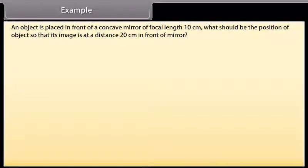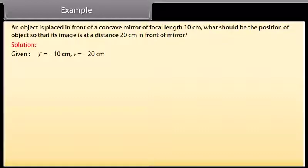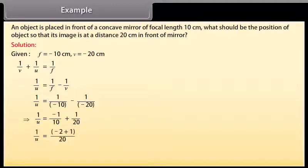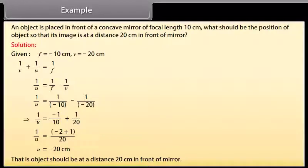Example: An object is placed in front of a concave mirror of focal length 10 cm. What should be the position of the object so that its image is at a distance of 20 cm in front of the mirror? Solution: Given f = −10 cm, v = −20 cm. Using 1/v + 1/u = 1/f: 1/u = 1/f − 1/v = −1/10 − (−1/20) = −1/10 + 1/20 = −2+1/20 = −1/20. Therefore u = −20 cm. The object should be at a distance of 20 cm in front of the mirror.